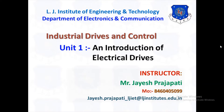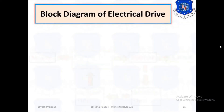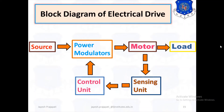In the last lecture, we discussed the block diagram of electrical drives. The block diagram has five main blocks: source, power modulator or power converter, electrical motor, mechanical load, and controller with sensing units. Now we will discuss each part of electrical drives.